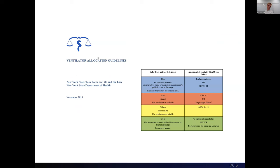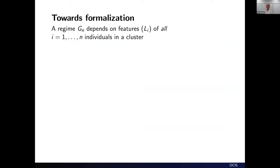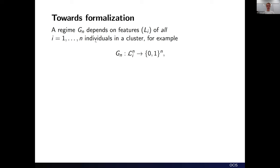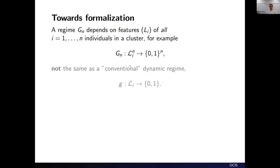Furthermore, when doctors make such decisions, they're not making them based solely on the characteristics of one patient — that's precisely what a waitlist is. Decisions are made based not only on an individual's characteristics but on all others in a cluster of individuals. This is reflected in allocation guidelines and triage rules where individuals are ranked based on clinical symptoms and other scores, and prioritized for treatment accordingly. To formalize this, we would think about treatment regimes — denoted G_n — that depend on features of not one individual but all individuals in a particular cluster.